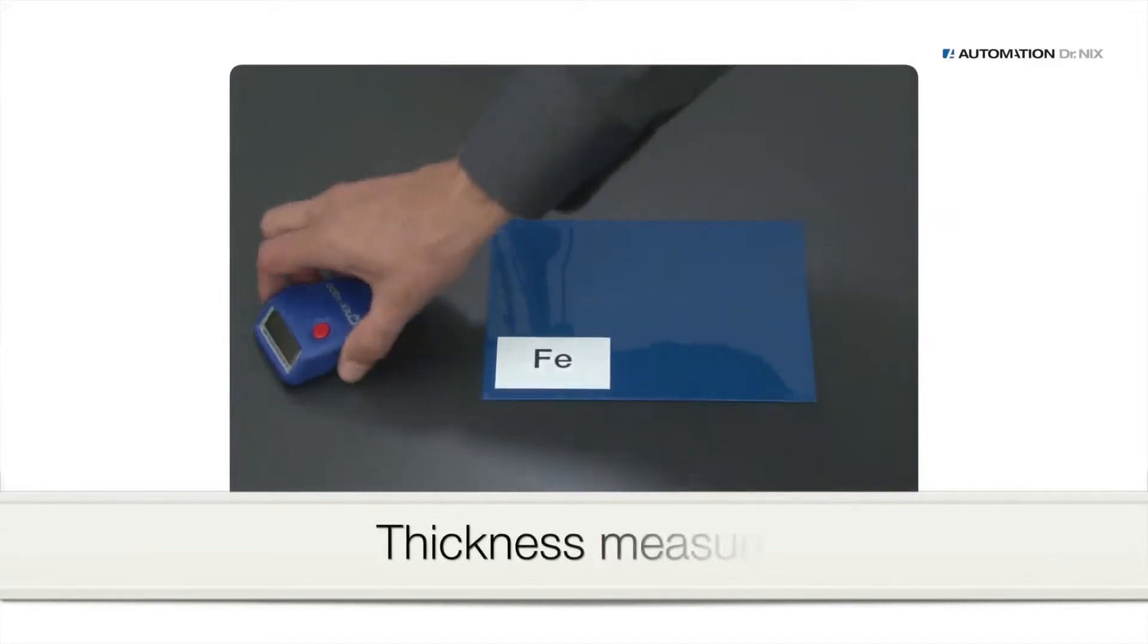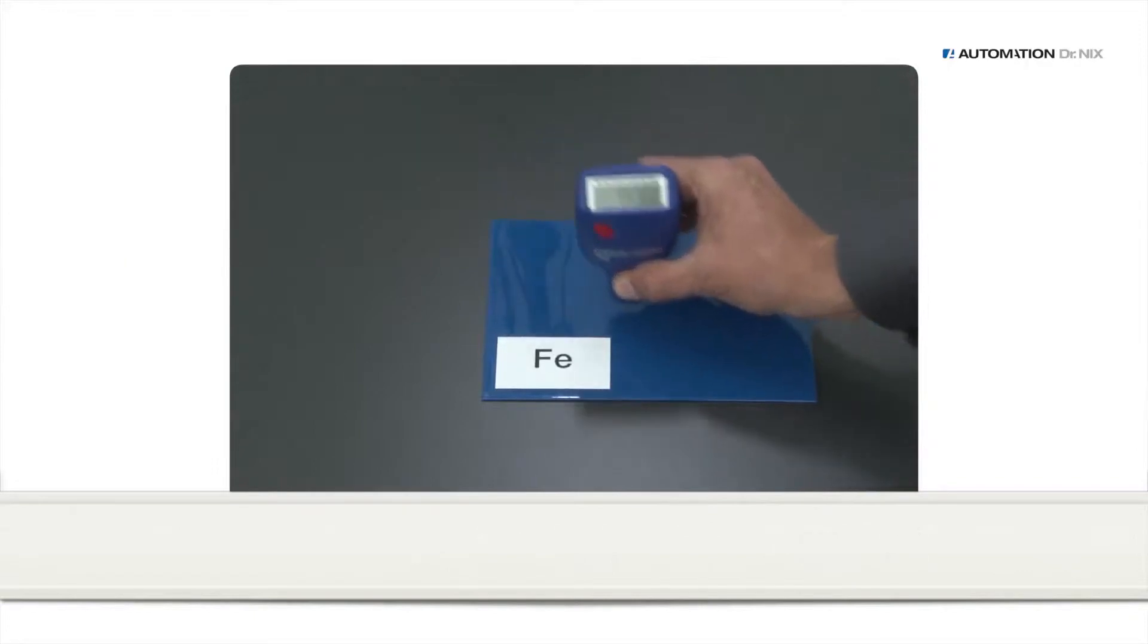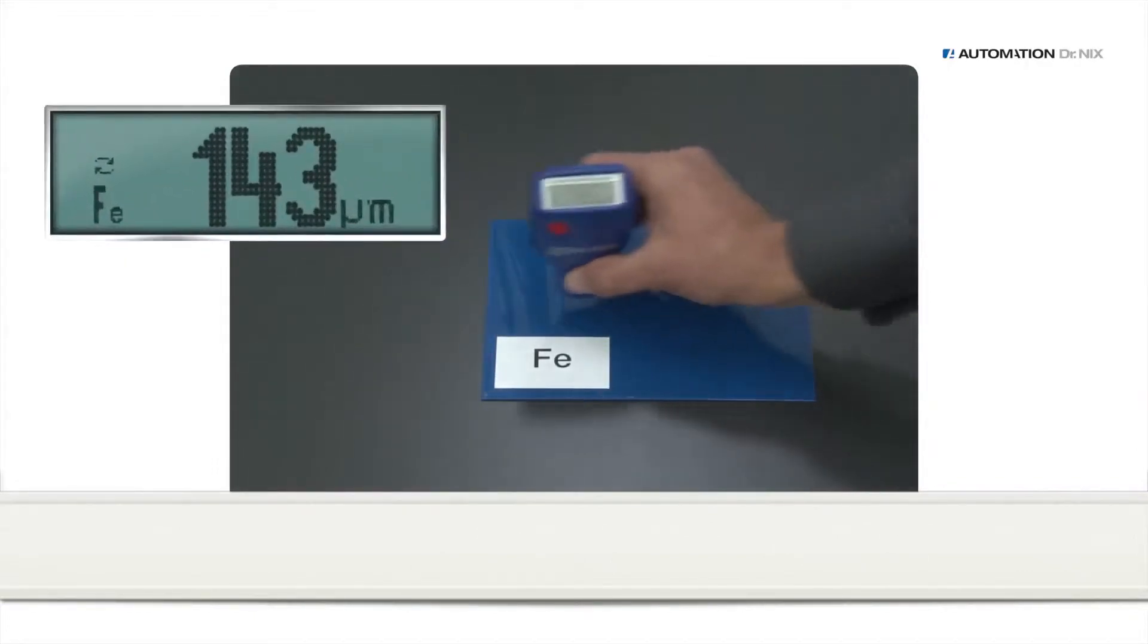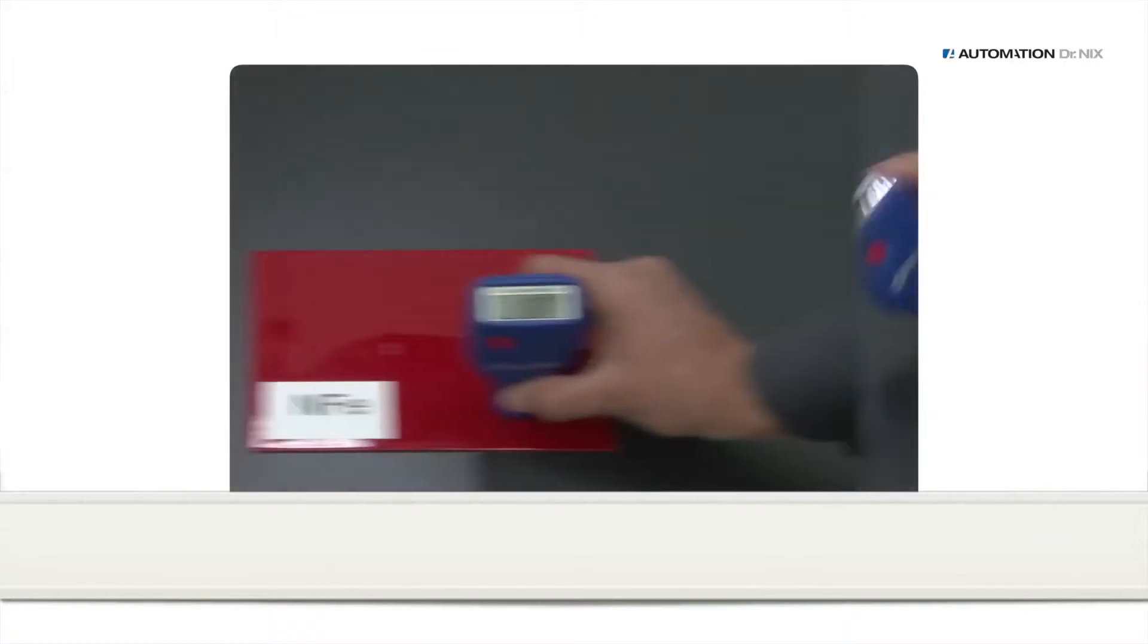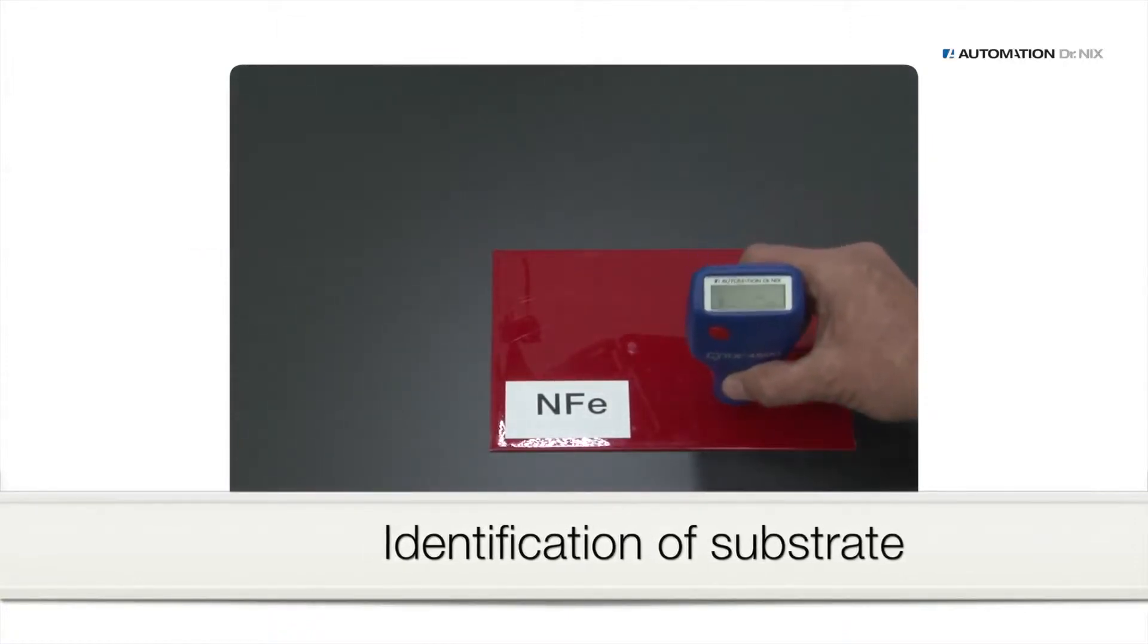To perform thickness measurement, place the QNIX 4500 plainly on the surface and read the measurement from the display. Measurements can be carried out in a quick series. In the dual mode, the gauge notifies you whether the substrate is iron or aluminum.